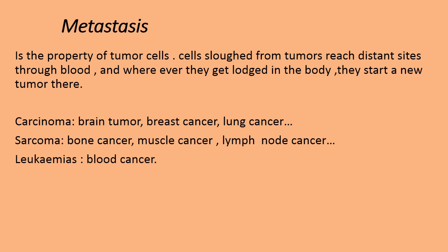Here are a few types of cancer. First is carcinoma — the malignant growth of epithelial tissue. Examples include brain tumor, breast cancer, and lung cancer. Then sarcoma — malignant growth in the mesoderm region, with examples being bone cancer, muscle cancer, and lymph node cancer. The third type is leukemia, which is blood cancer. These are the three different types of cancers seen in people.